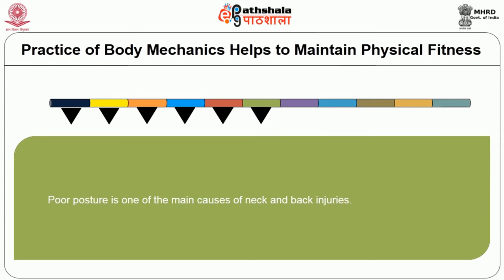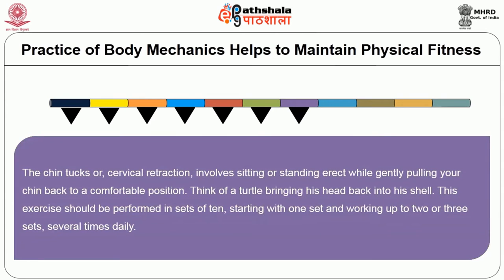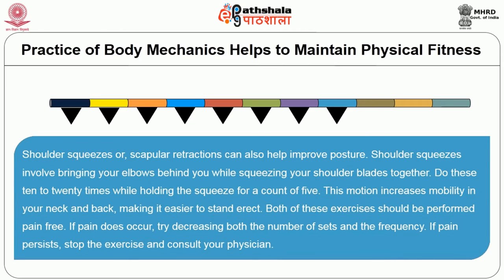Poor posture is one of the main causes of neck and back injuries. The chin tuck or cervical retraction involves sitting or standing erect while gently pulling your chin back to a comfortable position — think of a turtle bringing its head back into its shell. This exercise should be performed in sets of ten, starting with one set and working up to two to three sets several times daily. Shoulder squeezes or scapular retraction can also help improve posture. These exercises involve bringing elbows behind you while squeezing shoulder blades together, ten to twenty times, holding for a count of five.